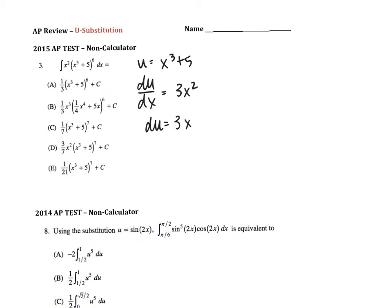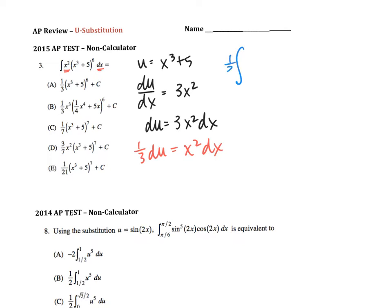I'm going to separate my variables, and I've got 3x squared dx. I don't need a 3x squared dx, but I do need a 1x squared dx, so I'm going to divide through by that 3. This allows me to rewrite my integral in simpler terms. Instead of writing x squared dx, I'm going to replace that with 1/3 du, and instead of writing x cubed plus 5 to the 6th, I'm going to write u to the 6th.